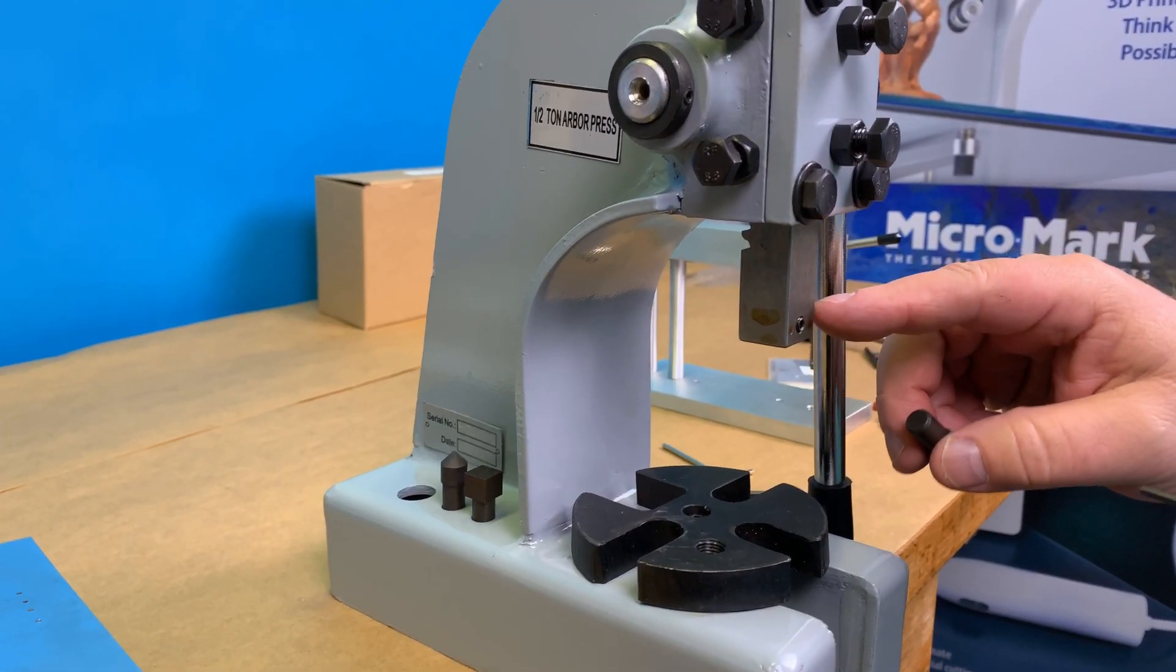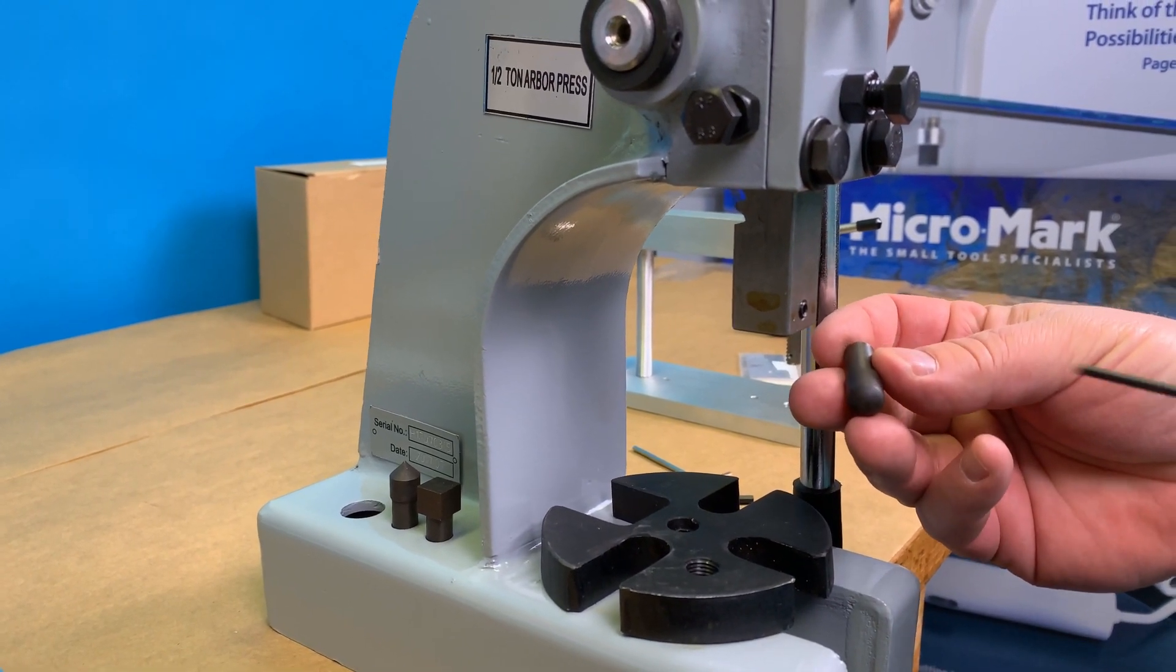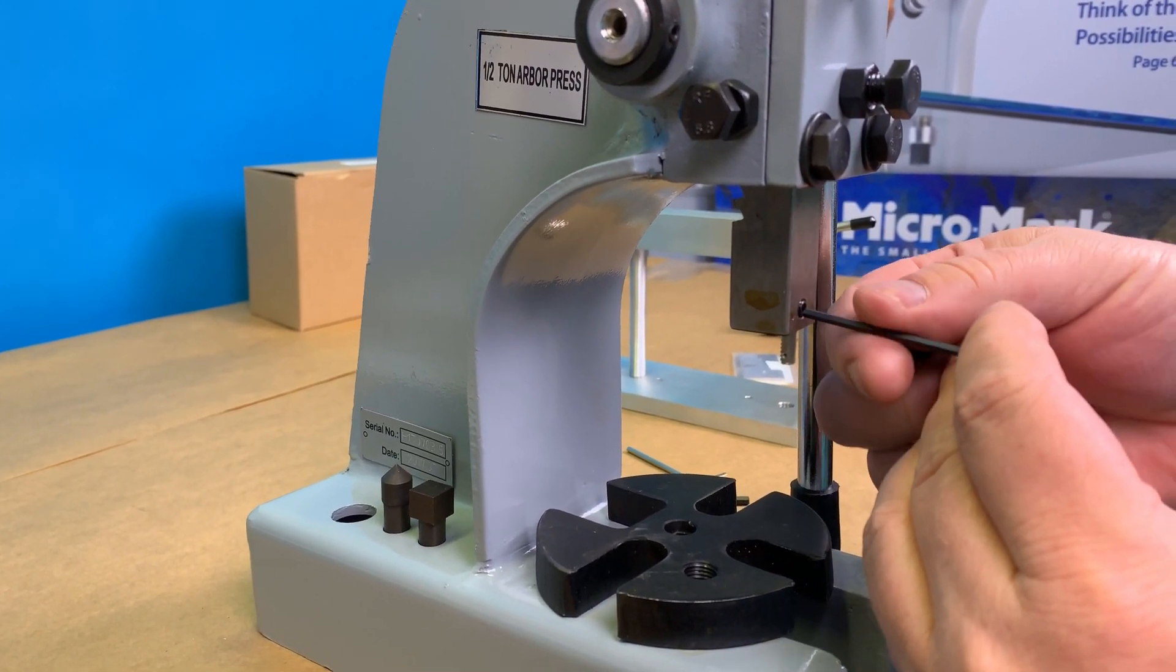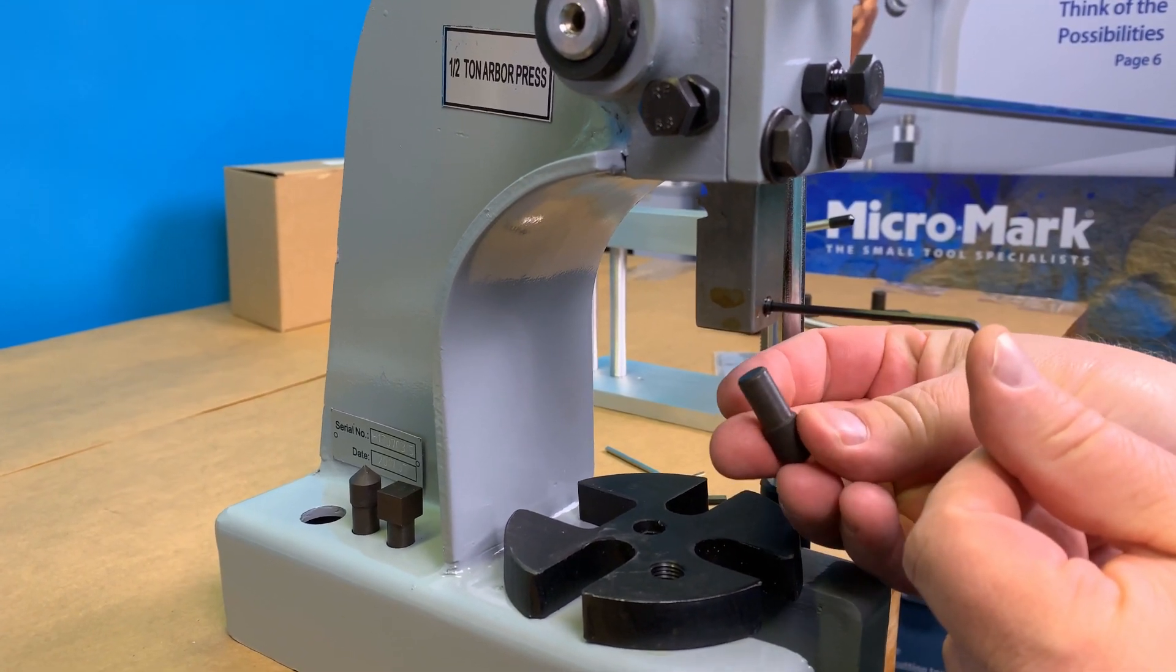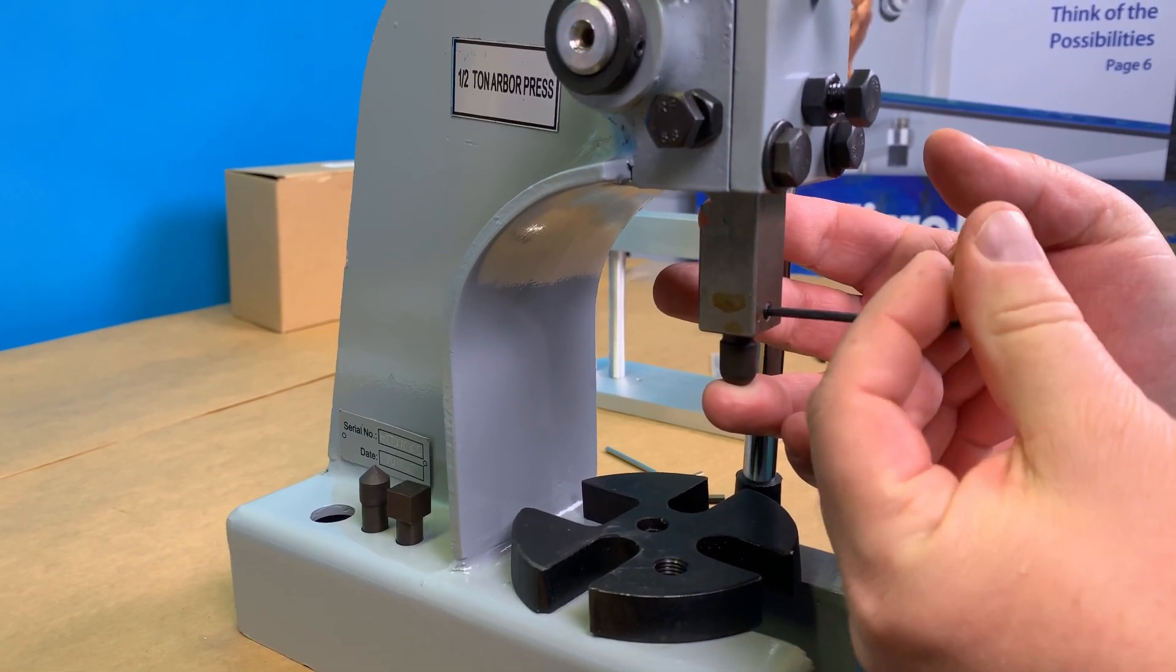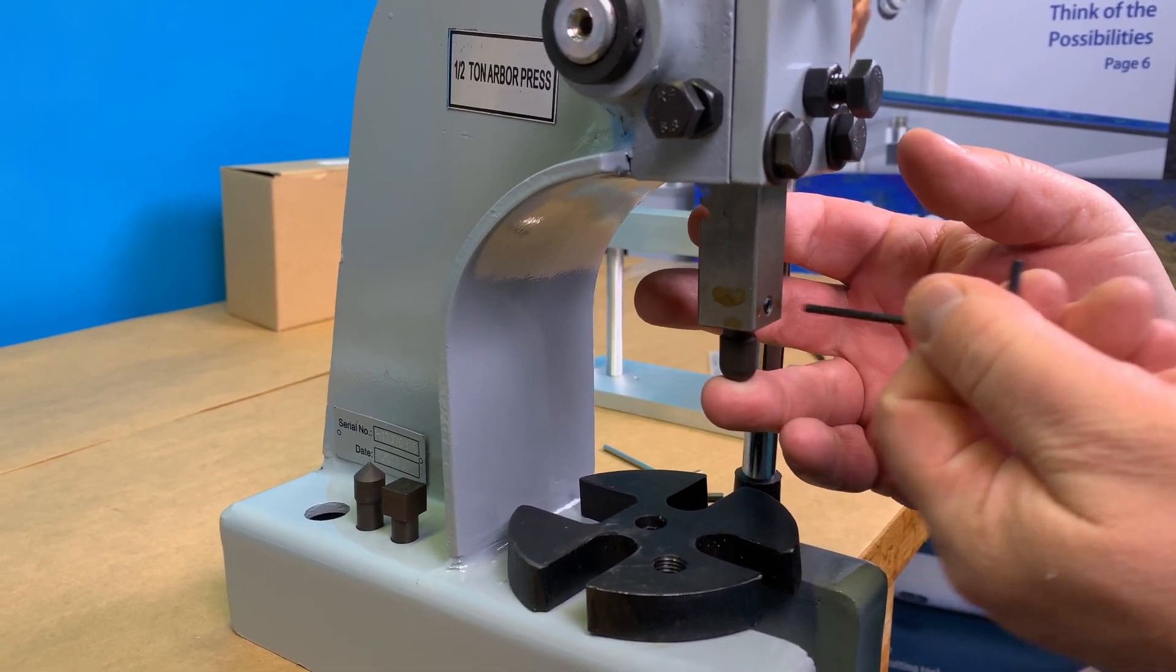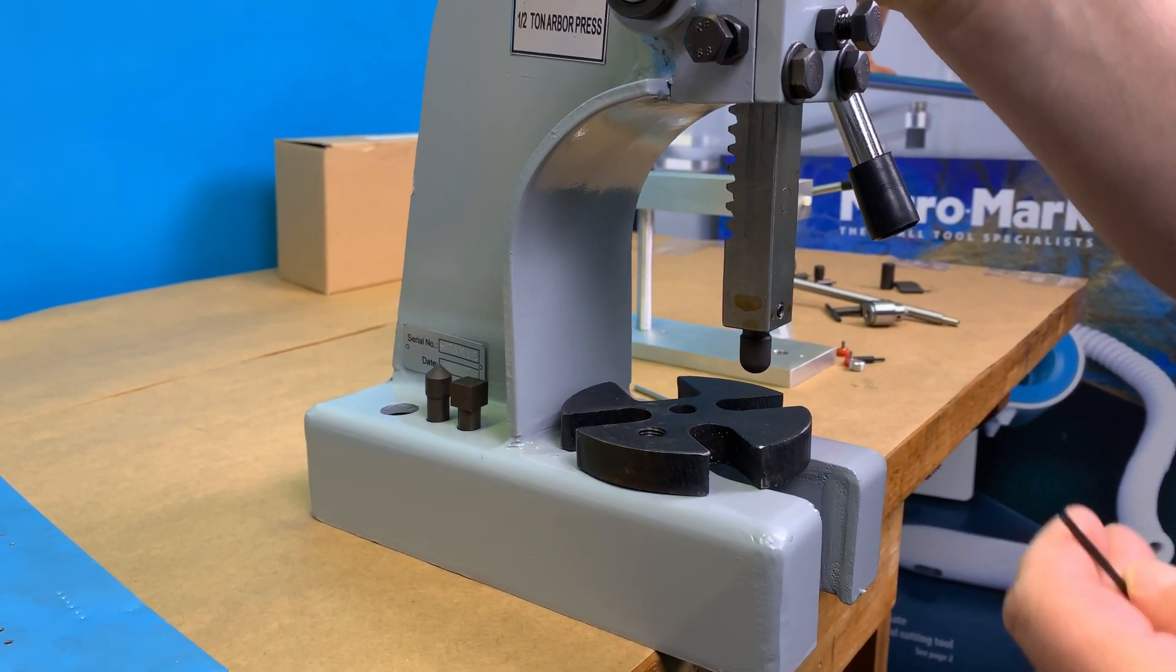The ram has a set screw in it. That screw is meant to hold the shank of the different tooling that comes with the tool. You need to loosen the set screw a bit, insert the three-eighths inch shank up inside and tighten down your set screw. And now you can perform your pressing operation.